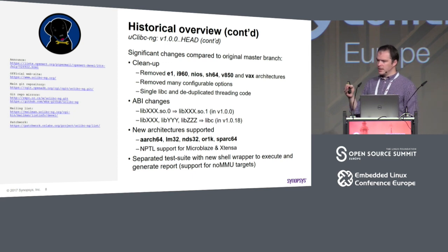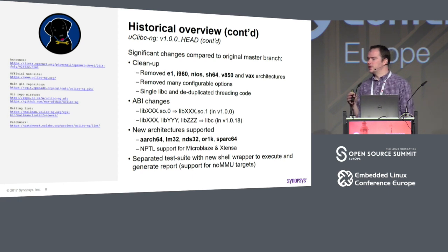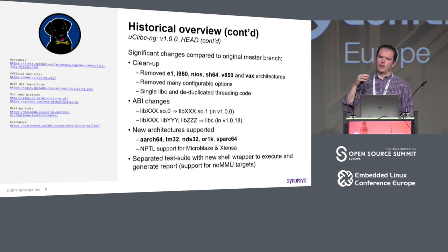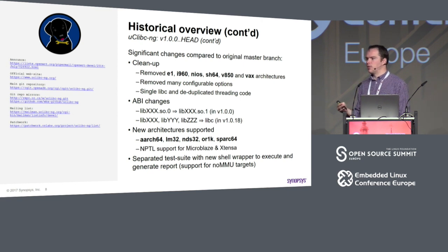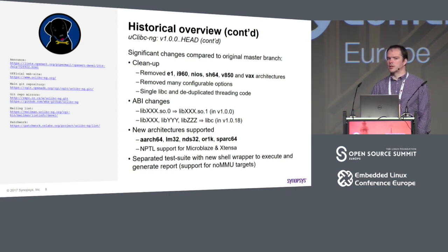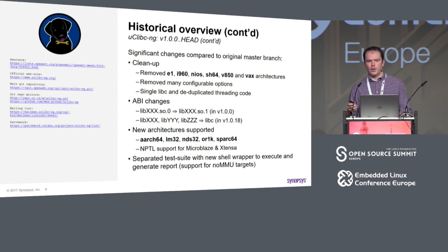Another significant improvement: the test suite was first separated from uClibc sources and then reworked. That rework included not only cleanups and minor fixes but an entire execution wrapper was modified - we switched from a Makefile-driven execution to a shell script. The difference is very important because uClibc supports no-MMU targets where you don't have fork, and make uses fork, which means the test suite was not usable on no-MMU targets. Now with a shell script it is possible to execute it and get results, giving us much better test coverage.